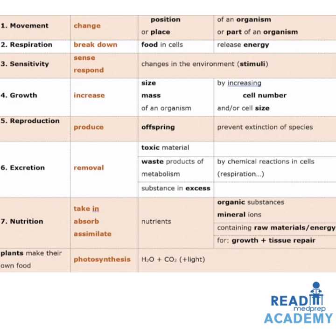Movement is a change in position of an organism or part of an organism. Respiration is the breakdown of food in cells that helps release energy. Sensitivity is a sense or response to changes in the environment, also called stimuli. Growth is an increase in the size and mass of an organism through increasing cell number and/or cell size. Reproduction produces offspring that prevent extinction of species. Excretion is the removal of toxic material and waste products of metabolism by chemical reactions in cells.